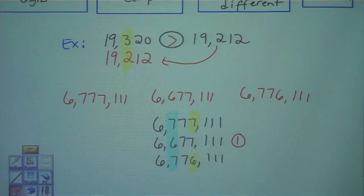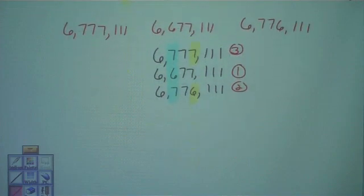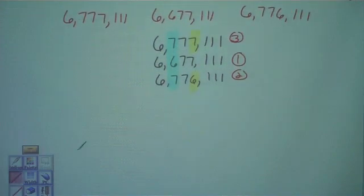Whichever one is the smallest is going to be second. Notice that the six is smallest. So that's going to be our second number in least to greatest. And this one's going to be our larger. Now the only thing we have left to do is write them in order of least to greatest.